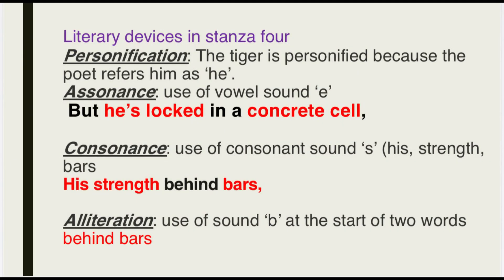Literary devices used in stanza 4: Personification — the tiger is personified because the poet refers to him as 'he.' Assonance — use of vowel sound 'e' in 'but he is locked in a concrete cell.' Consonance — use of consonant sound 's' in 'his strength, bars.' Alliteration — use of sound 'b' at the start of two words: 'behind bars.'